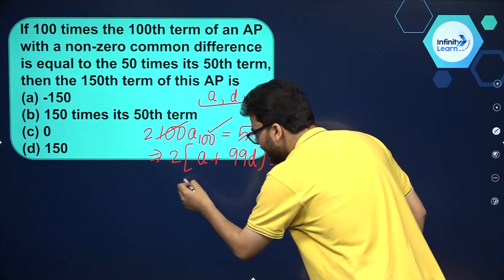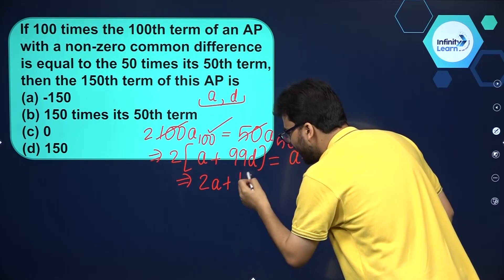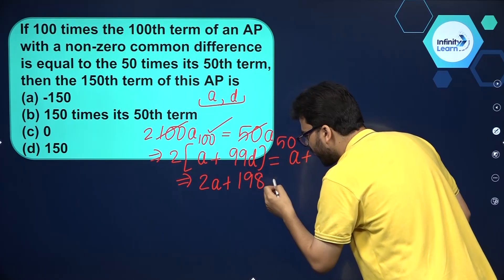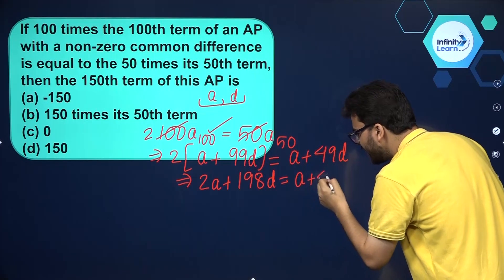Let's simplify by opening up this bracket. You will get 2A plus 198D, and that is equal to A plus 49D.